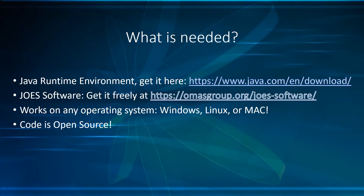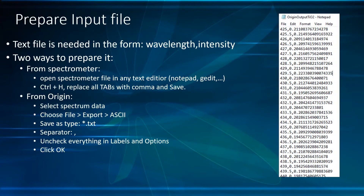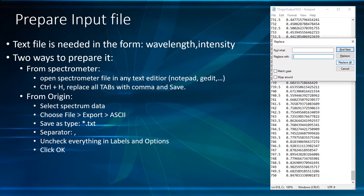How to prepare the input file? The input file must be in the form wavelength versus intensity, separated by comma. There are two ways to prepare the file. Directly from the spectrometer, open the file in any editor and replace all the tabs with commas and save.